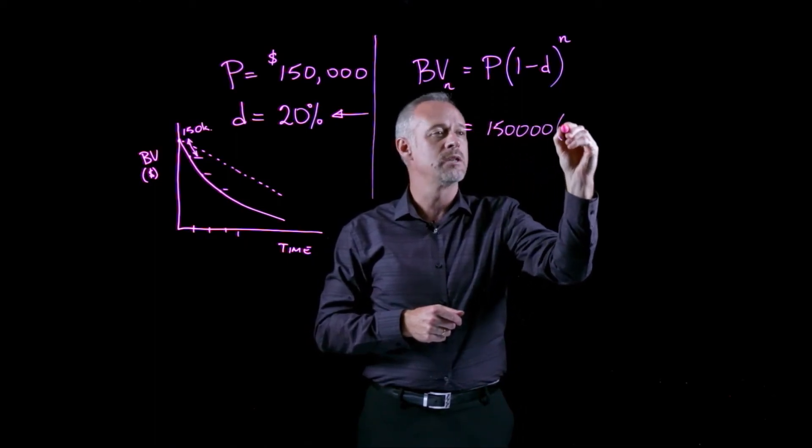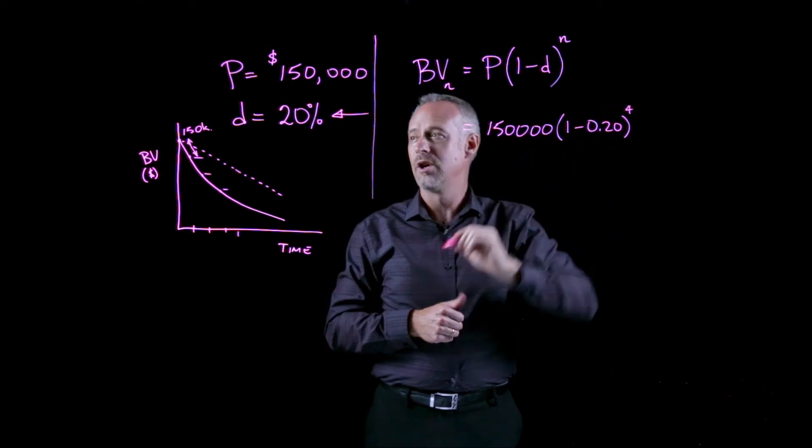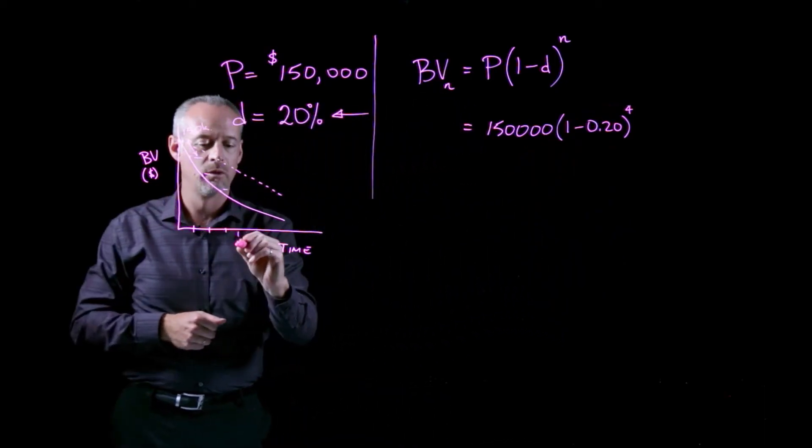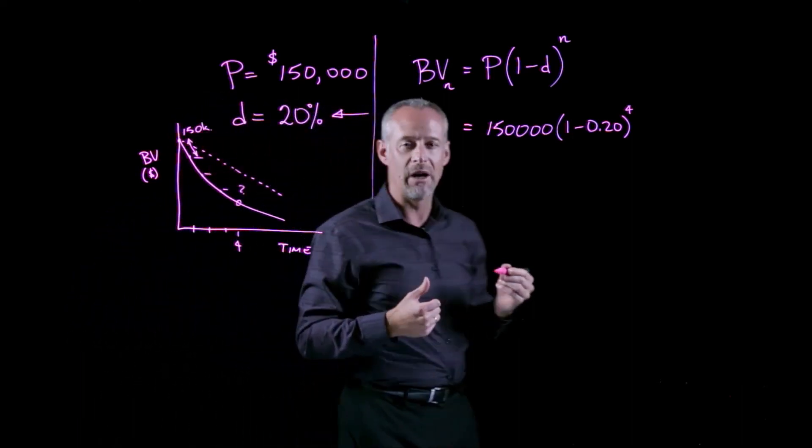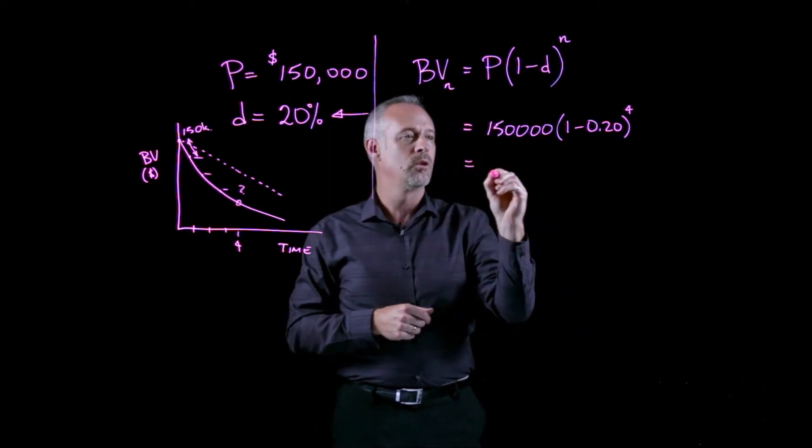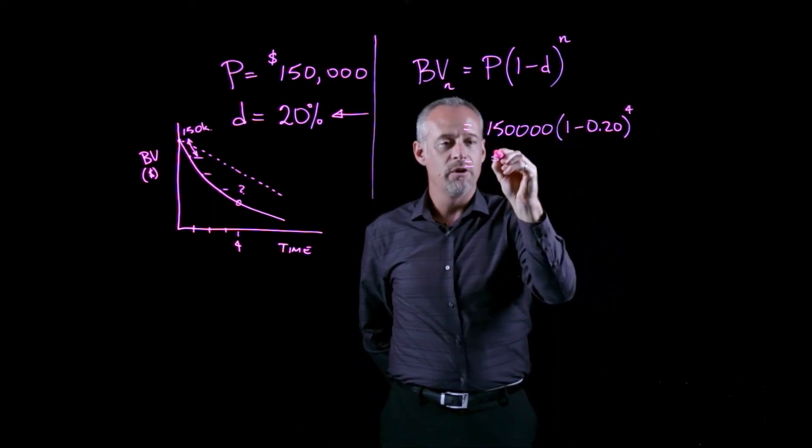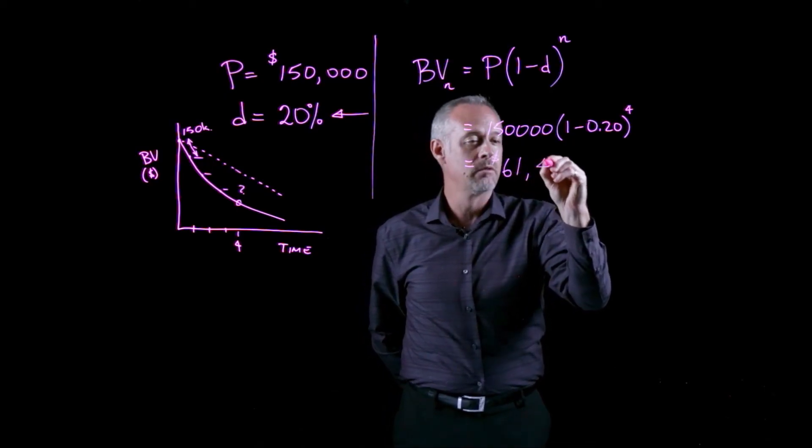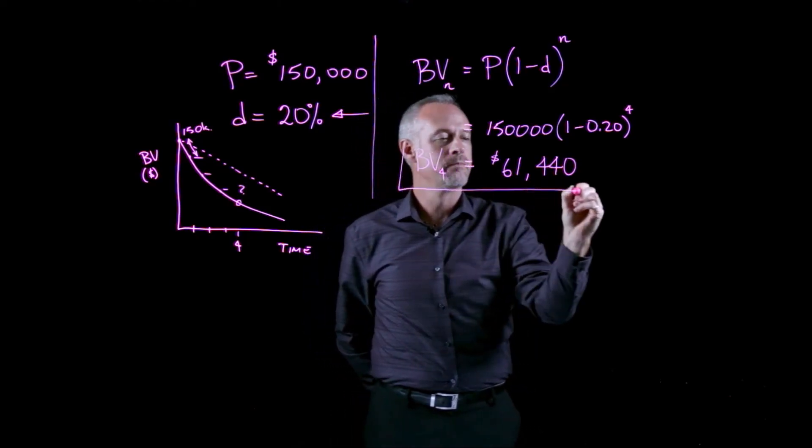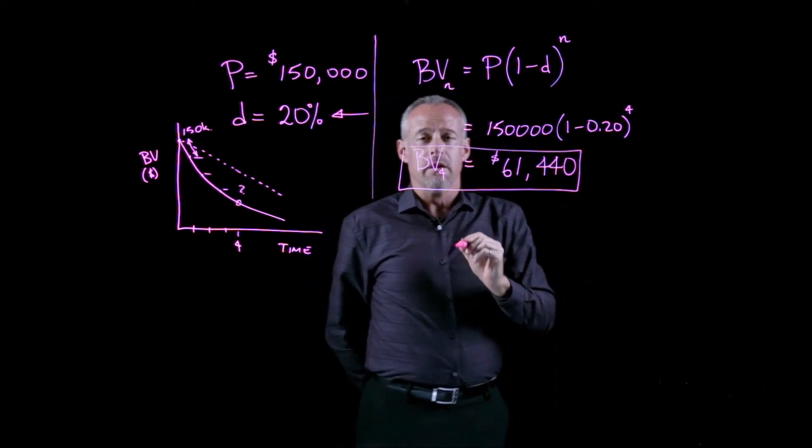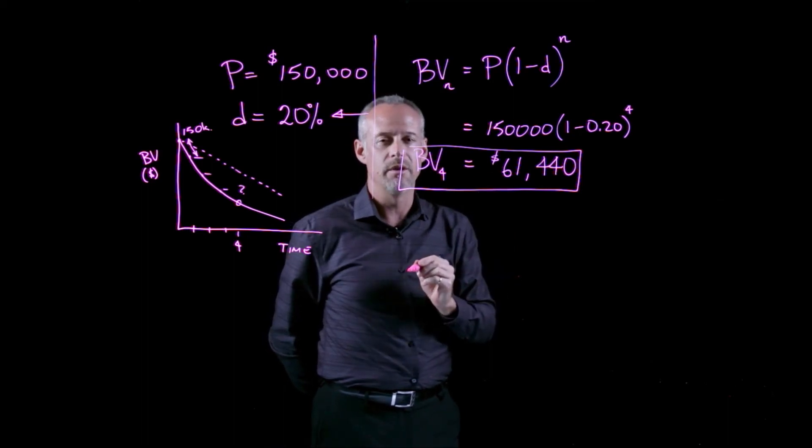it's 150,000 times 1 minus our 20% raised to the power of 4, where we were asked in the problem, what was the book value at the end of year 4 using declining balance depreciation? So if we work out what this is, we have 0.8 to the power of 4 times 150,000, and we should obtain a value of $61,440. That would be the book value at the end of year 4. So the answer to this problem, using declining balance depreciation, the book value at the end of year 4 is $61,440.